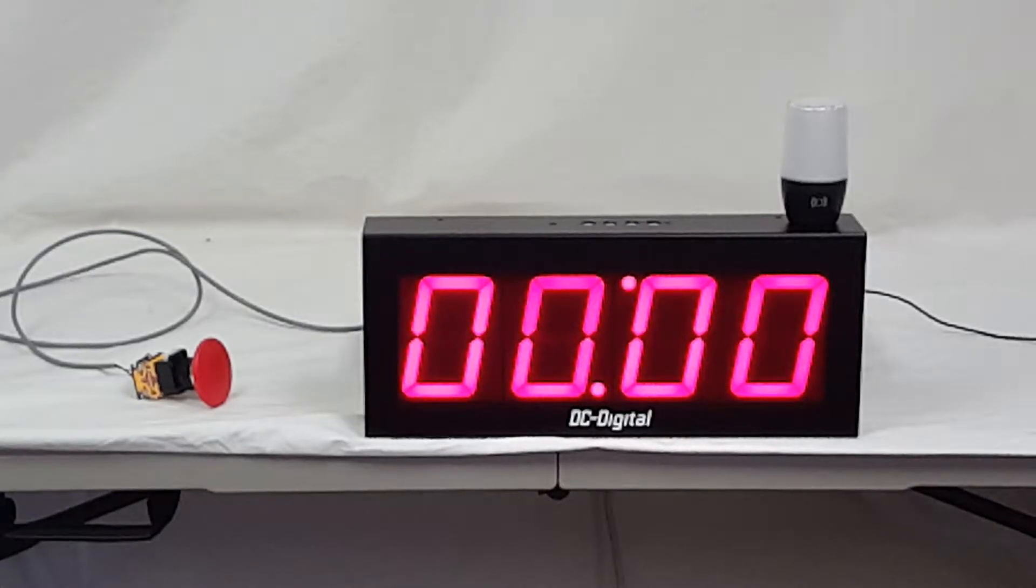The light also turns off when it gets to zero. So during the duration of the timed value, the andon light will be on and it will be displaying red. This is a multi-color andon light.